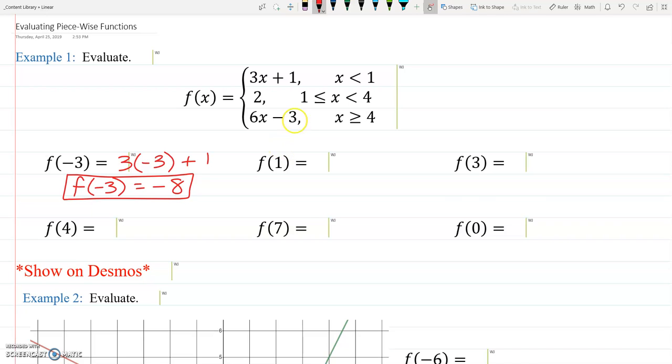Alright, next one. F of 1. So when X is 1, I need to figure out which of these boundaries to use. And there's a 1 in 2 places here, so this could mess us up. But if you look closely, it's not too hard. If X were 1, is 1 less than 1? No. So we're not using this top function. We're using the middle one because if X is 1, then 1 is greater than or equal to 1 if I read that backwards. So if I know I use the middle one, this is just a constant here, this 2. So I'm not even having to plug anything in. The answer is just my constant of 2.